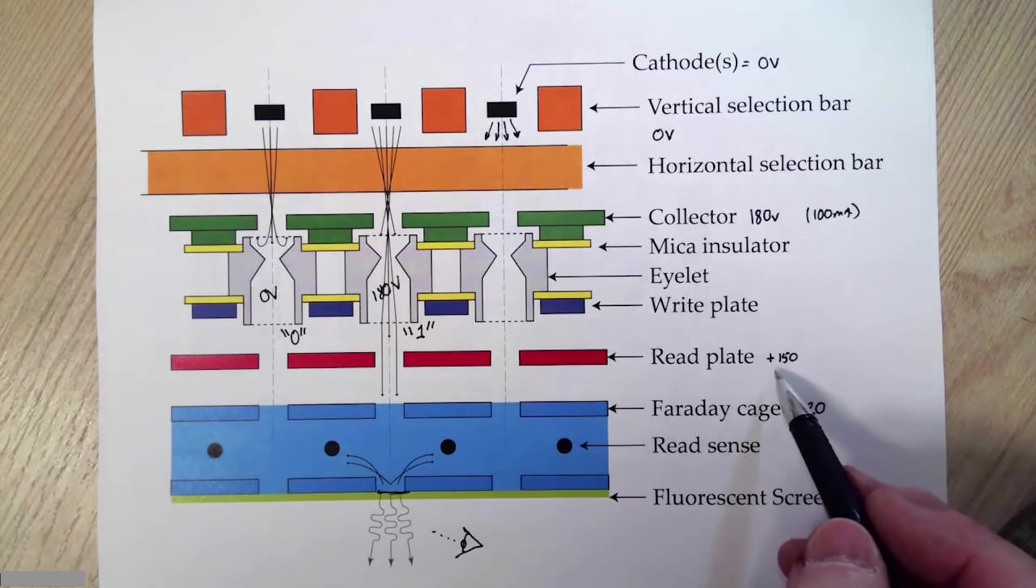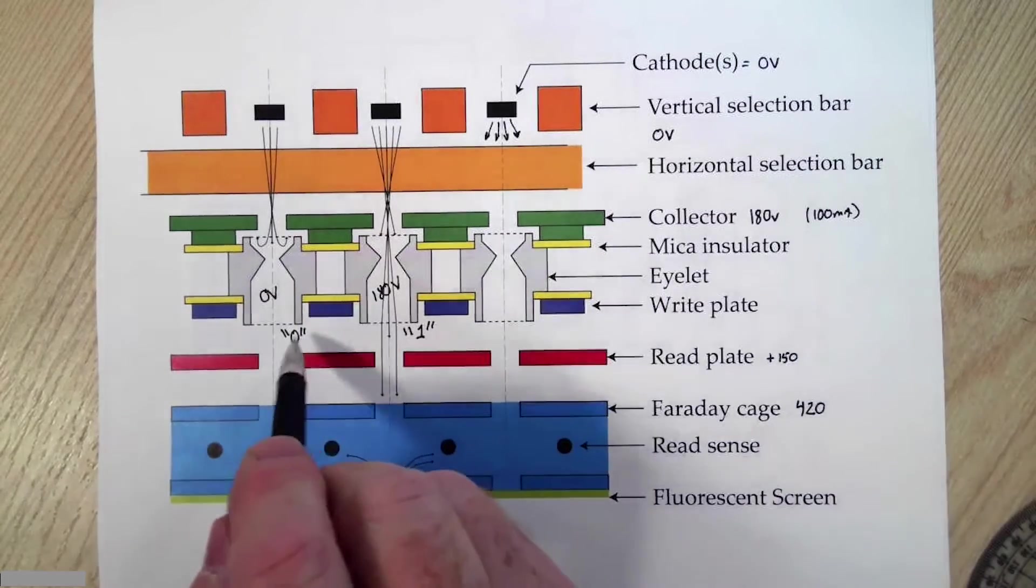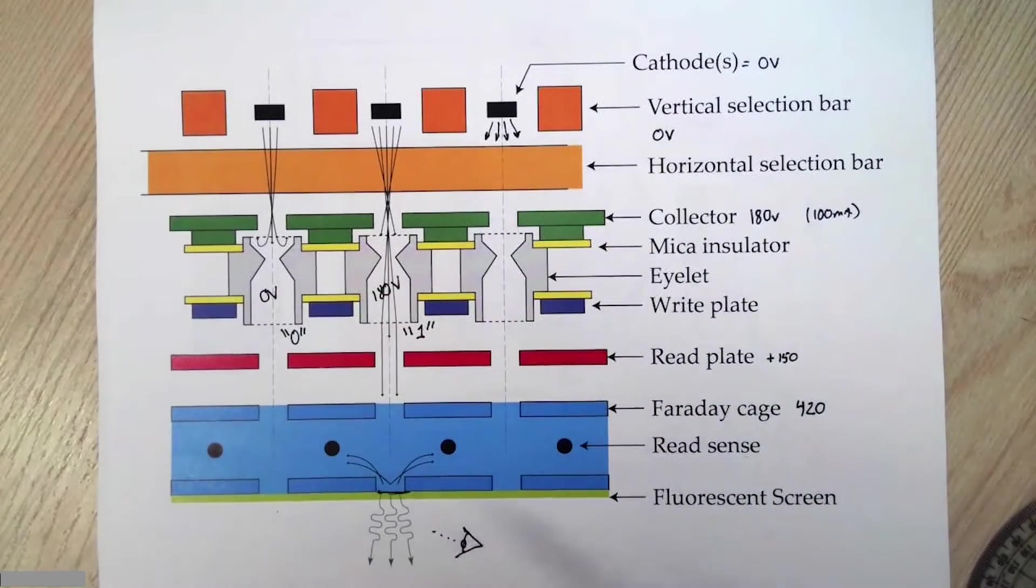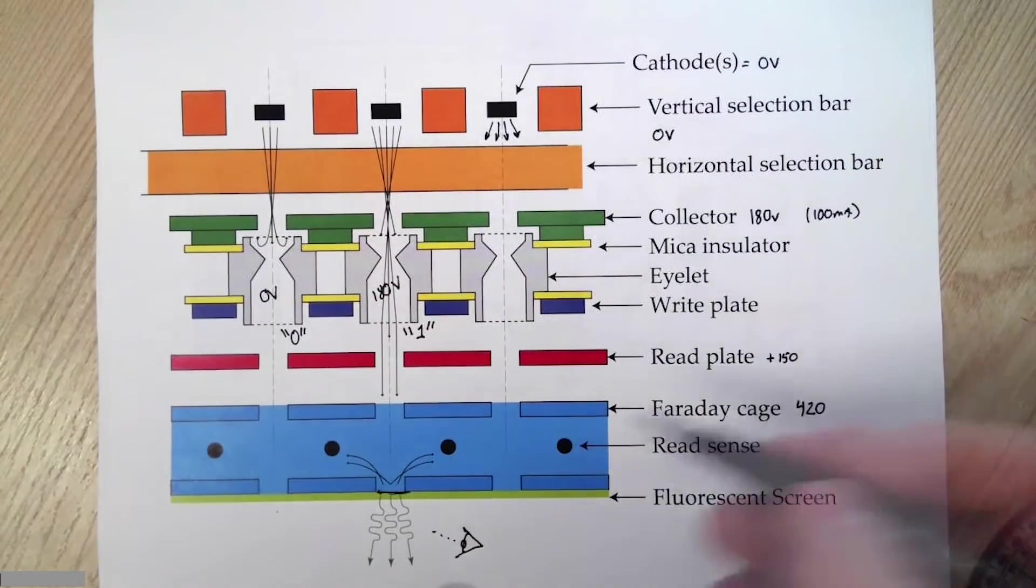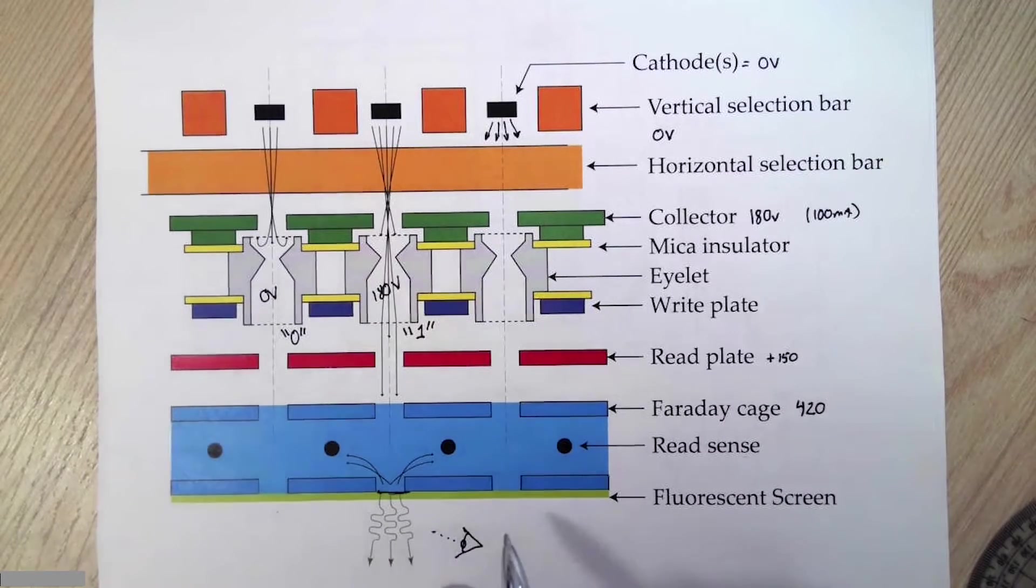So this current will come sailing through. We have enough energy once we hit our screen to produce photons. It fluoresces a little bit, and that gives me a visual indication of this bit being high. On the other hand, a read plate at positive 150, if we have a digital low or zero volts here, we have no current coming through. And this would appear as a dark spot.